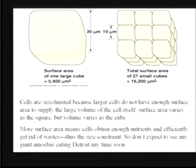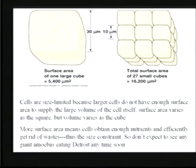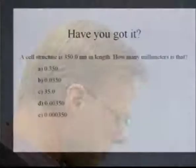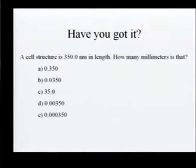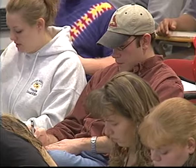Here's a question that asks: can you convert between different versions of the metric system? We have a cell structure that's 350 nanometers in length — how many millimeters is that? Take a few seconds and see if you can figure that out.